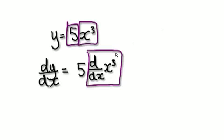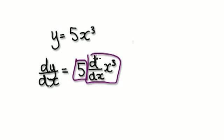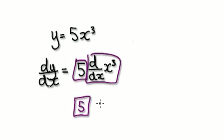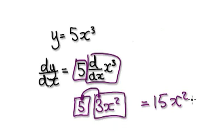So in effect, take the 5 out and concentrate on differentiating x to the power of 3. That would give you 3x squared. Now you can merge your 5 and the 3 together, and that would give you 15x squared.